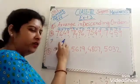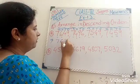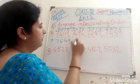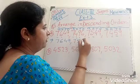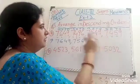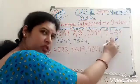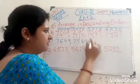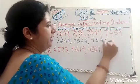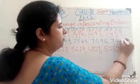So in that case our bigger number is this one: 7,649. So first of all we write down 7,649. Next, smaller number: 7,549. And as we already compared the other two numbers, this number is bigger and this number is smaller.